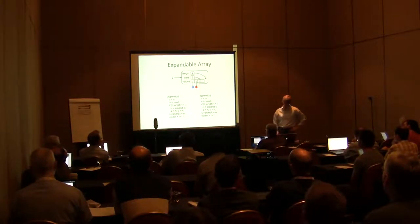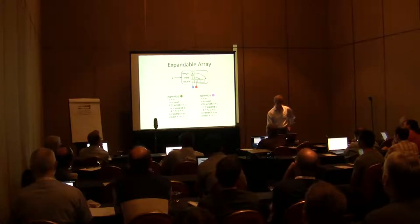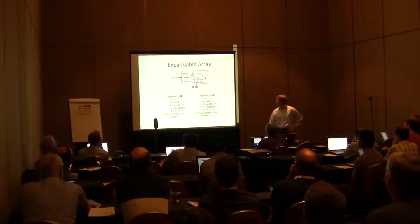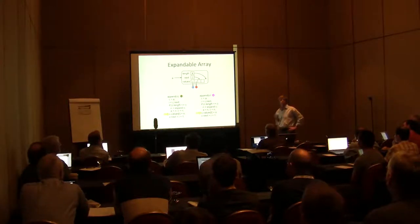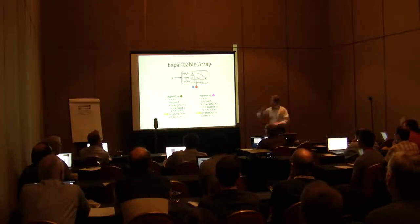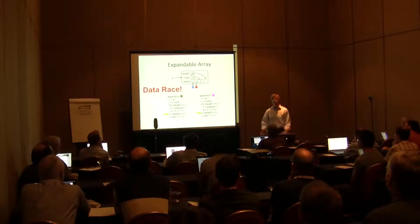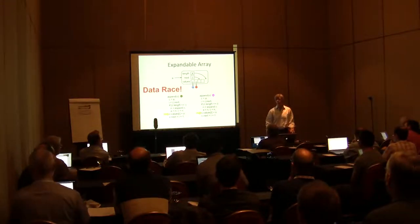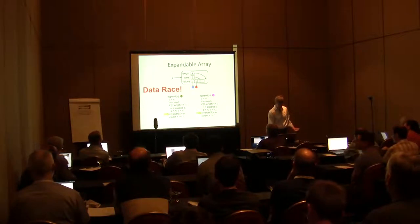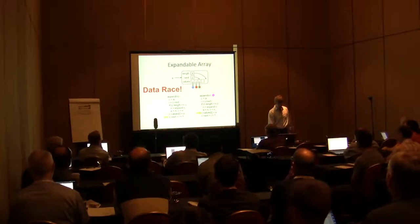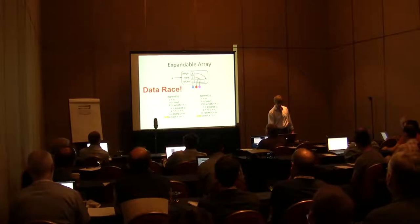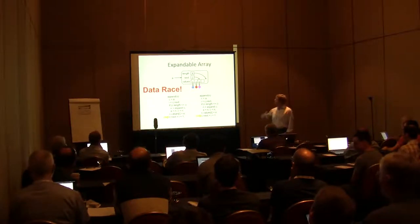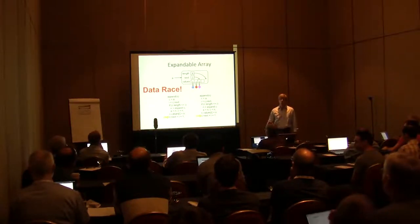What if you want to do two things in parallel? What if you want to insert the green guy and the pink guy in parallel? Both threads believe they can put their object into element number two of the array. This is called a data race — unsynchronized conflicting accesses to the same piece of memory. What could happen? The green guy could go in, then the orange guy, then the pink guy, and you lose the green guy.